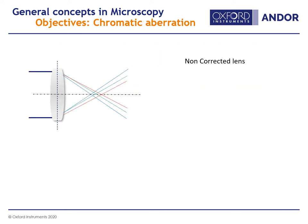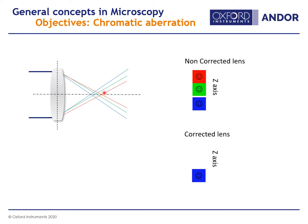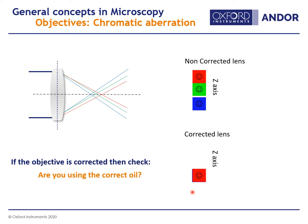Another correction in objectives is for chromatic aberration. Different wavelengths of light, if the objective is not corrected, will focus in different planes. On a non-corrected lens, a multicolor dot that should co-localize will appear as if the colors are in different z-planes. If the objective is corrected, all wavelengths focus at the same point and all colors appear in the same z-plane. If your objective is corrected, also check that you are using the correct oil to correct for refractive index mismatch, which can also cause some chromatic aberration.